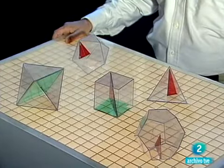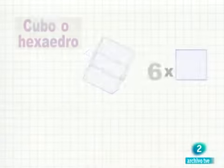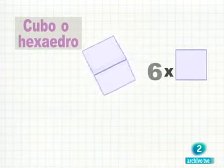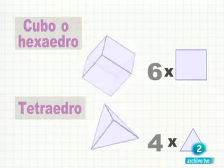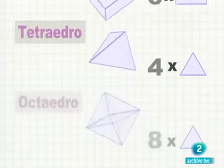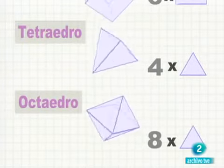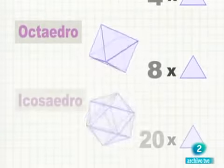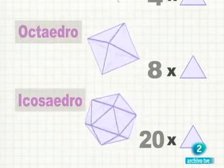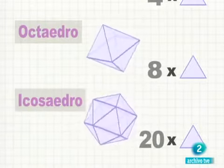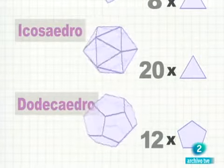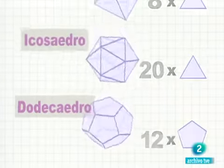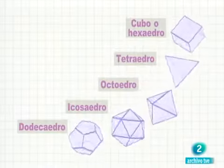Estos cuerpos son poliedros convexos. El nombre de Euler está íntimamente ligado a todos ellos. Este es un cubo. Está formado por seis cuadrados iguales. Este otro tiene cuatro caras triangulares y se llama tetraedro. El número de caras de este otro es ocho. Es un octaedro. Este es un icosaedro. Está formado por 20 triángulos iguales. Este otro, el último sólido platónico, está formado por 12 caras pentagonales. Es un dodecaedro.